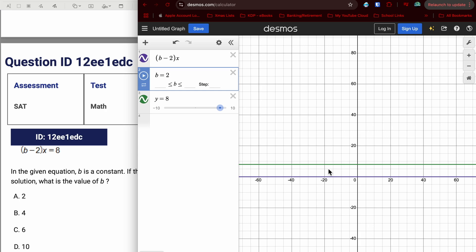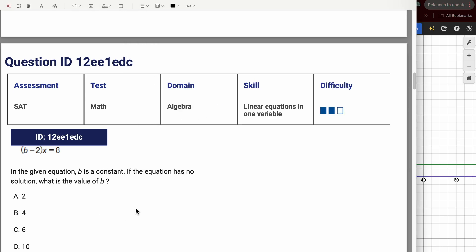Had that not worked, if I plug in 4, I can clearly see they intersect. So there would be a solution. If B was 6, they intersect. If B is 10, they intersect. So with B being 2, the two lines are parallel, which then is no solution. So the answer is A.